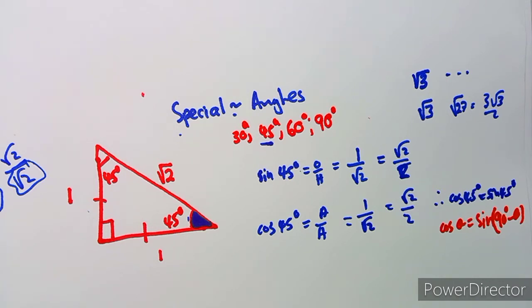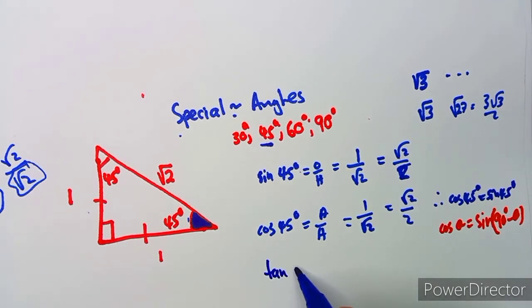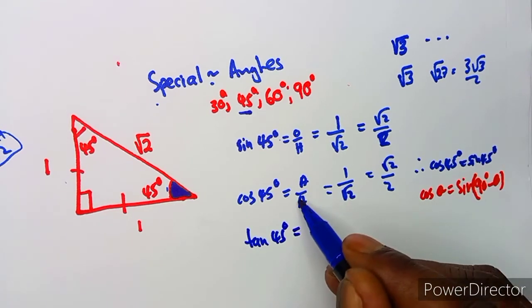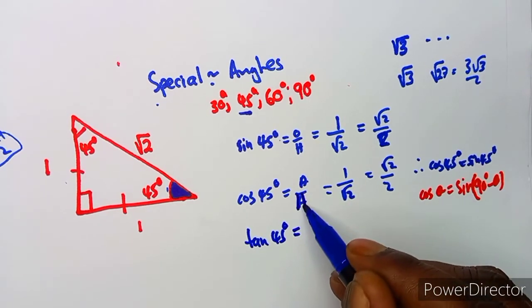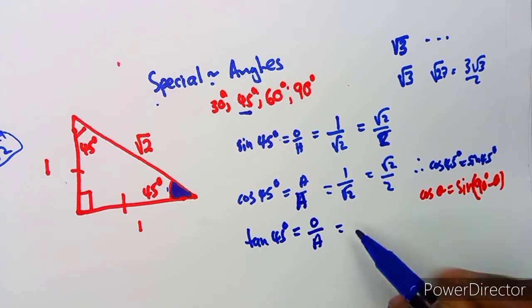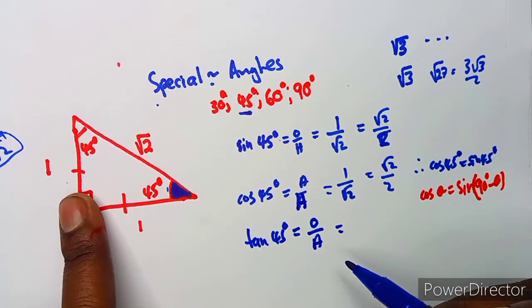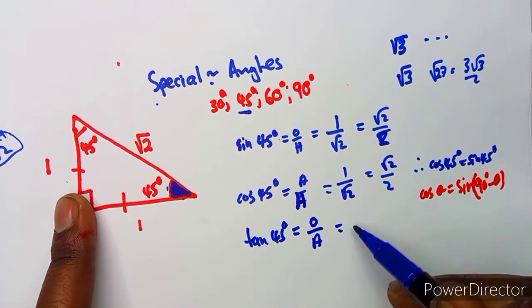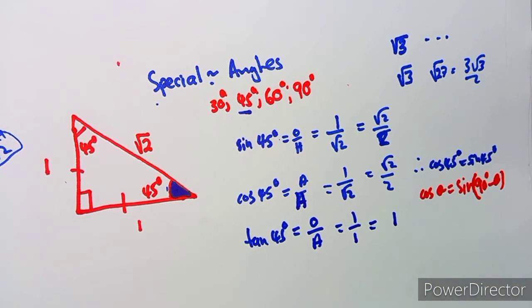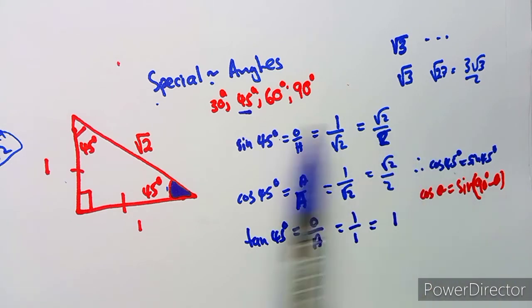Tan 45 degrees: tan is opposite over adjacent, which is one over one, which equals one. Use your calculator to verify — you will obtain the same answer.